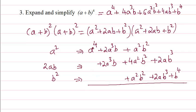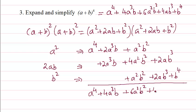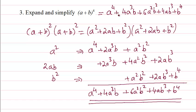Now we simplify: a⁴, then (2 + 2) = 4, so 4a³b, then 6a²b², then 4ab³, then b⁴. So we basically proved that formula.